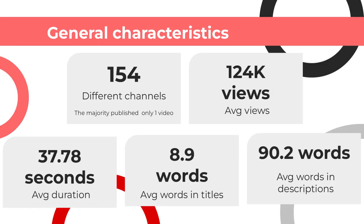An analysis of the dataset revealed that the Shorts corresponded to a total of 144 distinct channels, where the vast majority of them only published one video, while there were a few dedicated pages that regularly mention Wikipedia. On average, the Shorts had received 124k views, had a duration of 37.88 seconds, and had around 9 words in the title and 90 in the description.